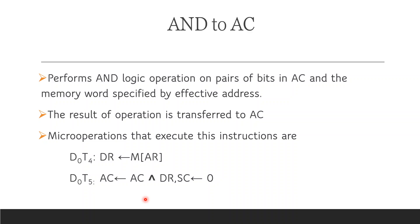The AND instruction performs a logical AND operation on pairs of bits in the accumulator (AC) and the memory word specified by the effective address. The result of the AND operation is stored back in AC. So the result of the operation is transferred to AC.